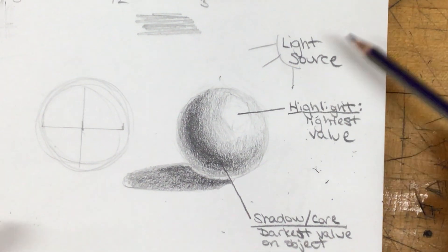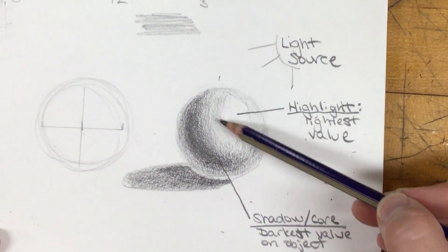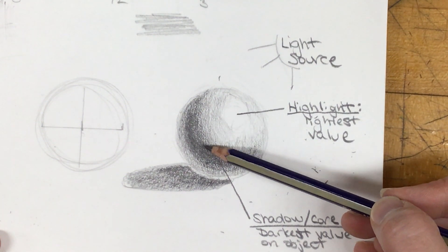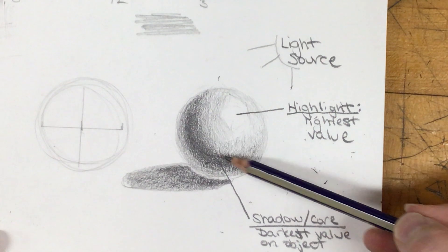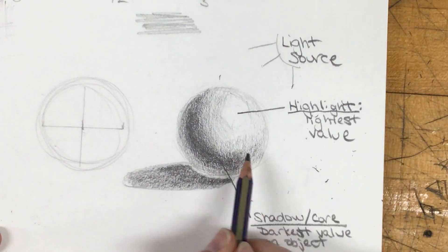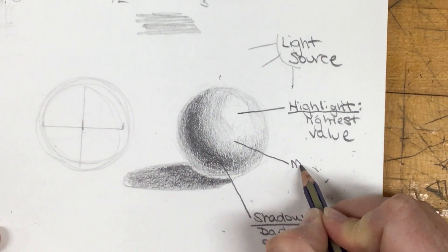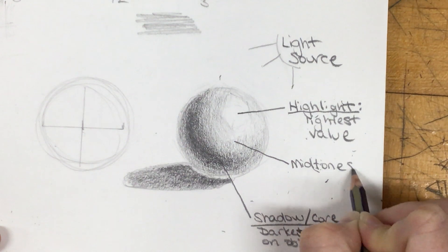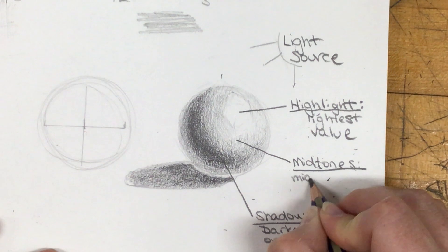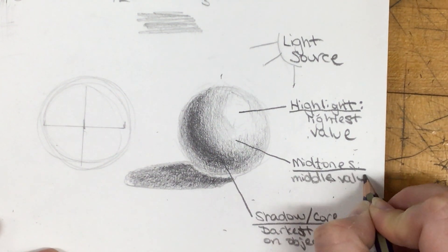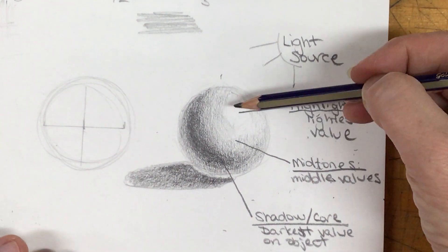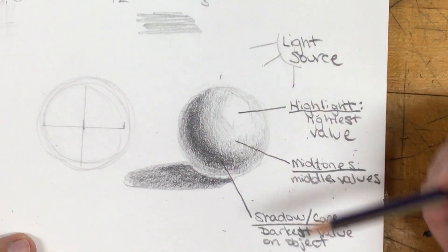And so remember, if the light source is hitting, this is where the light hits the most. And then as it moves, it's going to have less and less light reaching it. So the value is going to get darker until no light is reaching that shadow. So then the in-between, we're going to call our midtones. So this is our middle values.